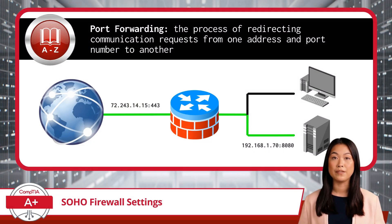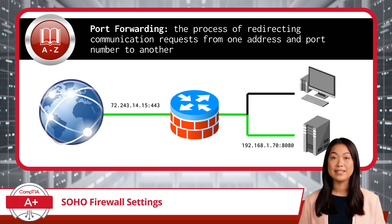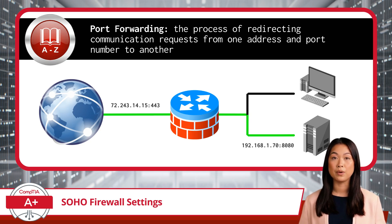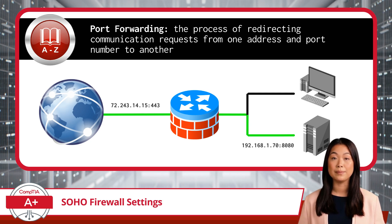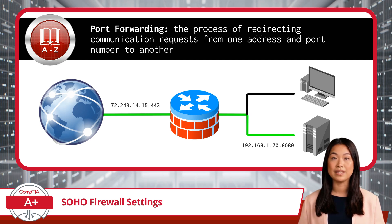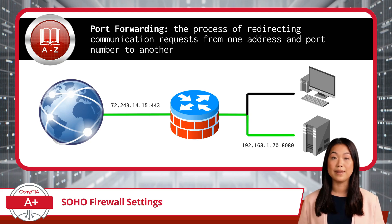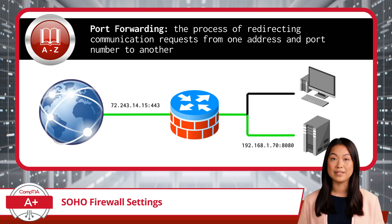Now, let's move on to port forwarding, which is important when you need to allow external traffic to access a specific service inside your network. Port forwarding, sometimes referred to as port mapping, is the process of redirecting communication requests from one address and port number to another. This occurs when data packets are received by the network gateway. Port forwarding allows external devices to connect to a particular service or device within your network, by mapping the external port to the internal IP address of the device hosting the service.